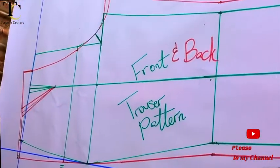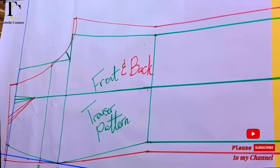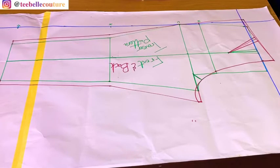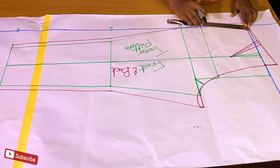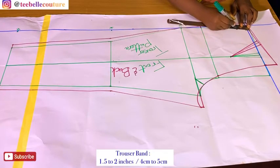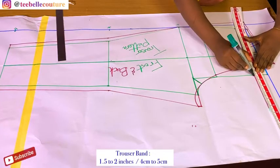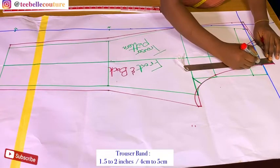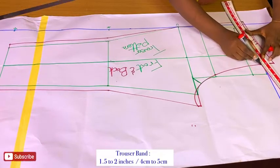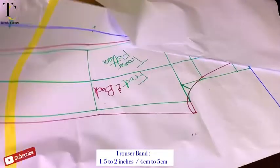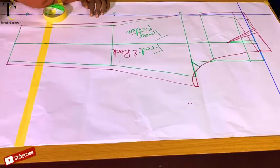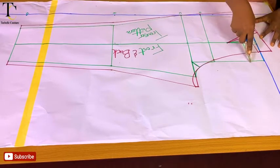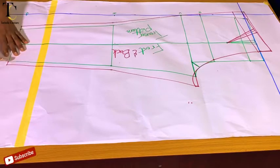I have both my front trouser and the back trouser on the same pattern paper. The next thing I'm going to do right now is to mark out my trouser band exactly from this same pattern. I'm coming down by five centimeters for the front and back trouser for my band — this is two inches. Then I'll connect the lines together. Once I'm done indicating the band on my pattern, the next thing is to trace out my front trouser pattern.